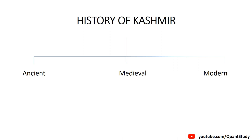The most important period is modern history, then medieval, then ancient — because modern history has the most exam questions, then medieval, then ancient. The types of questions asked relate to the founders of these dynasties: who was the founder of a particular dynasty in Kashmir? In this video, we will read about ancient history. Let's start.